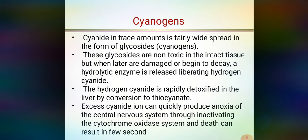Cyanide stress is fairly widespread in the form of glycosides. These glycosides are non-toxic in their intact tissue, but when tissues are damaged or begin to decay, a hydrolytic enzyme is released which liberates hydrogen cyanide. The glycosides, or cyanogens, are present in the tissues of pulses, and whenever these tissues are damaged or start to decay, the hydrolytic enzymes liberate hydrogen cyanide.